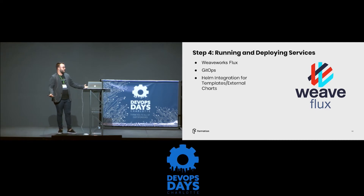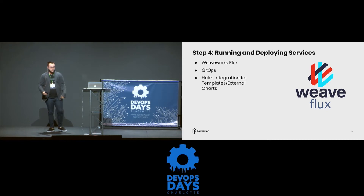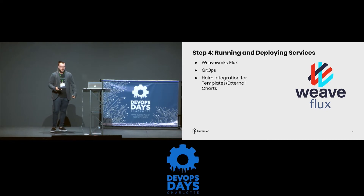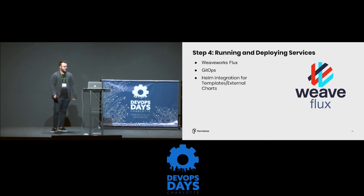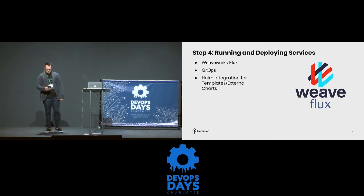We also needed to deploy all those things, so we're using Flux from WeWorks — another GitOps method of deploying things with great Helm integration. We can write out charts, template things, and deploy them out to all of our environments. It also has support for external charts, so all the tools from the previous slide — it's done. We just import them in, just like a yum install.